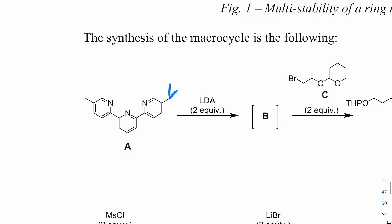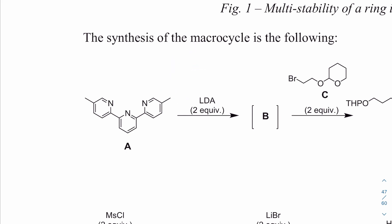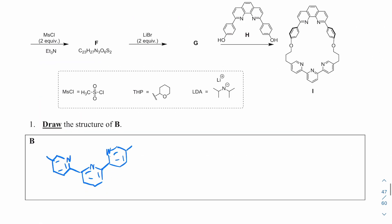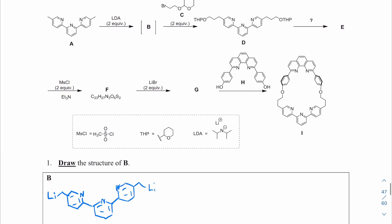LDA is a base, so it deprotonates. We have three protons on each methyl group. LDA — lithium diisopropylamide — deprotonates and puts the electron on the carbon, and it does that on both sides. You can either draw two negative charges with Li⁺ ions, or covalently attach the lithium to the carbon — it doesn't matter. That's going to be compound B.